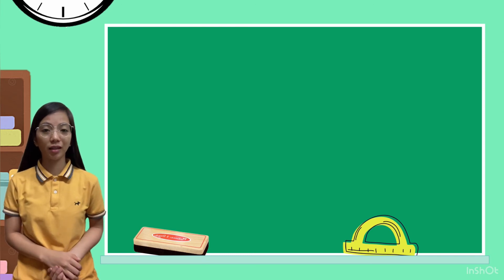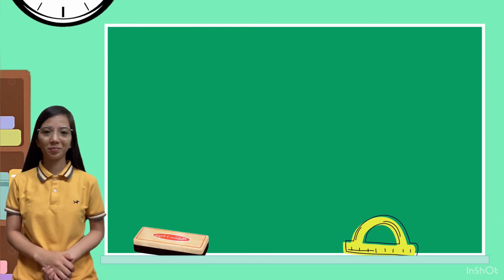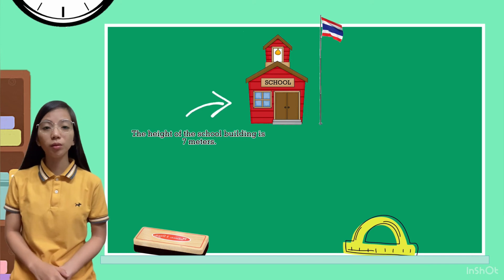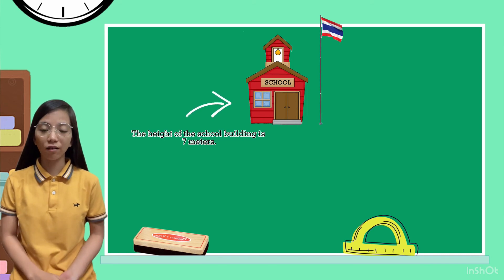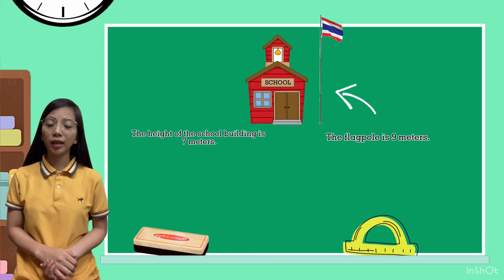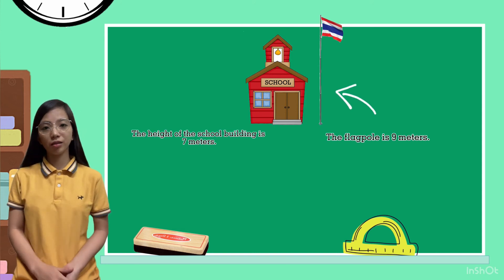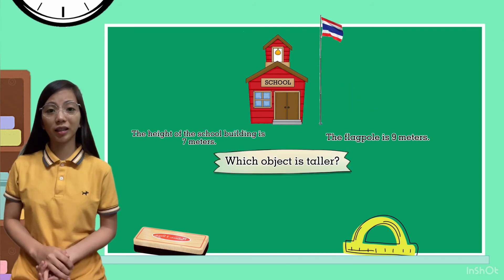Now, let's try to compare objects using meter. The height of the school building is 7 meters. The flagpole is 9 meters. Which object is taller?